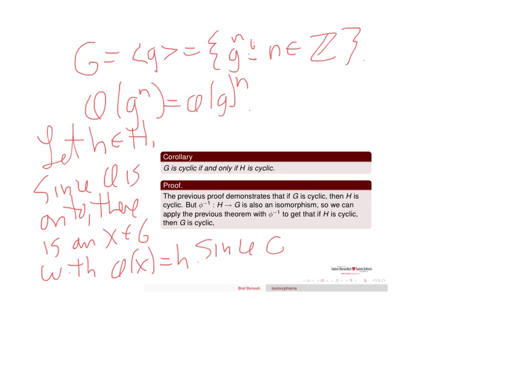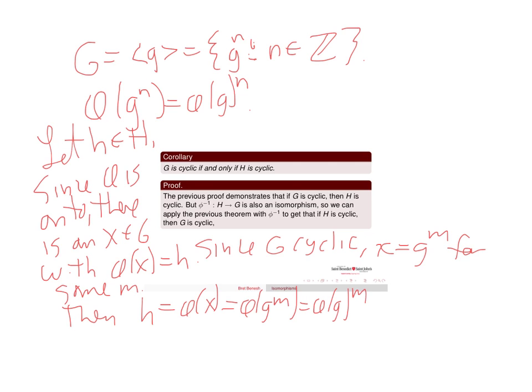Since G is cyclic, X equals G to the M for some M. Then, H equals phi of X equals phi of G to the M equals phi of G to the M.